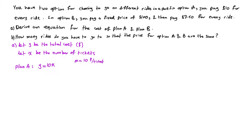With this equation, if you have one ticket the total cost is 10 times 1, which is 10. If you have two tickets, 10 times 2 is 20. If you have three tickets, 10 times 3 is 30. This is a very good equation to explain plan A.